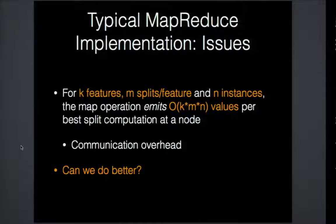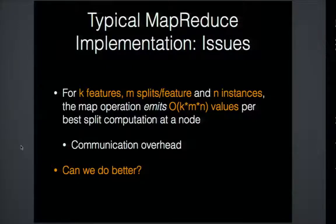In general, if we have k features, m splits per feature, and n instances, the map operation emits on the order of k times m times n values per best-split computation at a node. This leaves a lot of communication overhead, so the question is: can we do better?